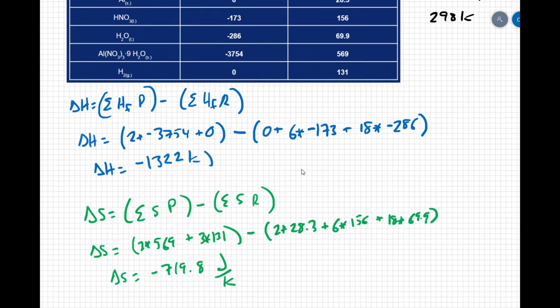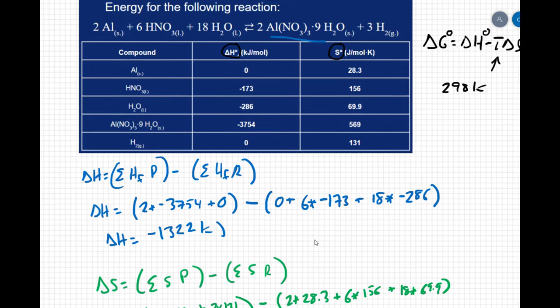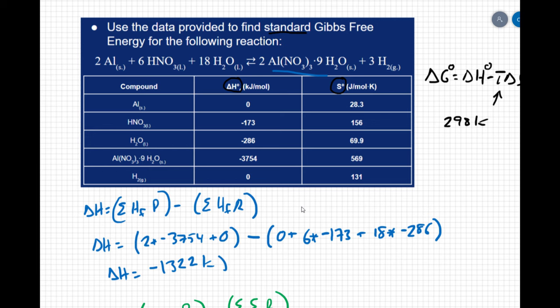My delta S value is negative, and so that's telling me that we are losing entropy. We are becoming more ordered. And that makes a lot of sense because take a look I've got 2 moles of a solid plus 6 moles of a liquid plus 18 moles of a liquid all turning into 2 moles of a solid and 3 moles of a gas. So I have a lot of stuff turning into very few molecules. So that makes sense to me that this is a negative delta S value.